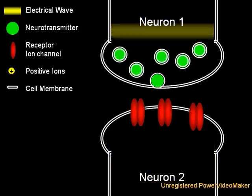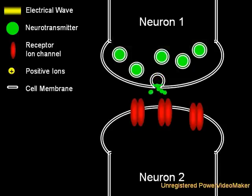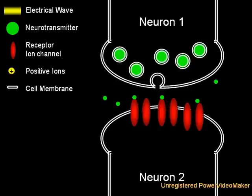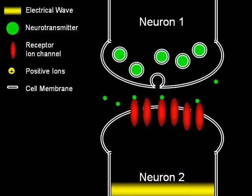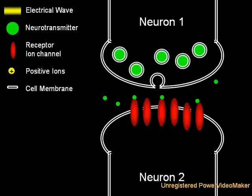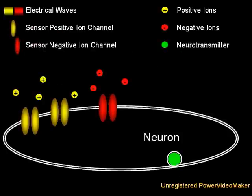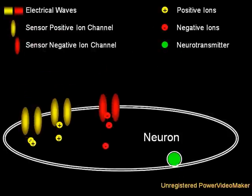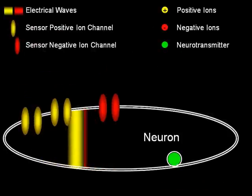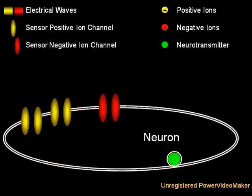Over time, through gene duplications, mutation, and natural selection, different types of neurotransmitters and receptors evolved. Some allow positively charged ions to flow into the cell leading to an electrical wave, resulting in the release of neurotransmitter from that cell, and are thus termed excitatory synapses. But others allow negatively charged ions to flow into the cell. These can essentially cancel out any positive waves, thereby preventing the cell from releasing neurotransmitter, and are therefore called inhibitory synapses.